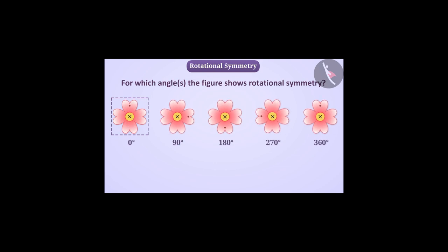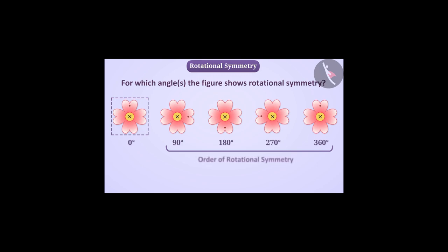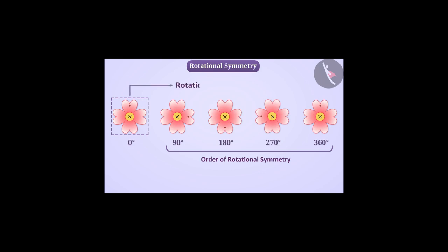Therefore, we can say that in one complete turn of the figure — that is, its rotation by 360 degrees — we see 4 such cases where the figure looks exactly in the same state as the initial figure. The number of times a figure looks exactly in the same state as its initial figure in a complete turn is called its order of rotational symmetry. Since this figure appears in the same state as its initial figure 4 times in a complete turn, it has a rotational symmetry of order 4.